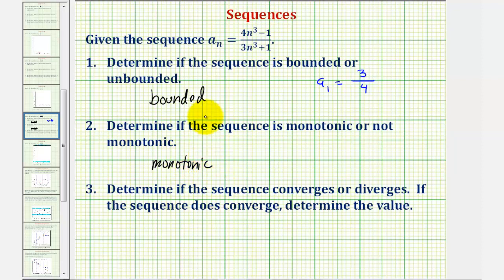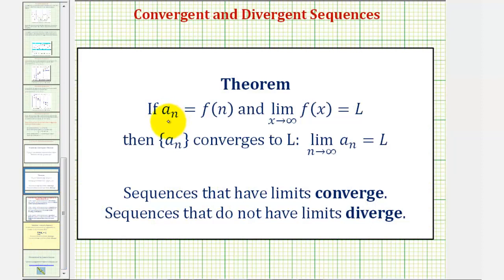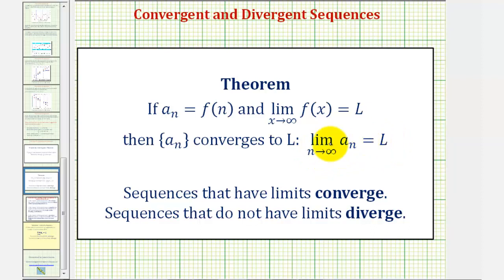There is a theorem that says if we have a bounded and monotonic sequence, the sequence will converge. More formally, if a sub n equals f of n, and the limit as x approaches infinity of f of x equals L, then the sequence a sub n converges and converges to L. So the limit as n approaches infinity of the sequence is also L. Sequences that have limits converge, and sequences that do not have limits diverge.